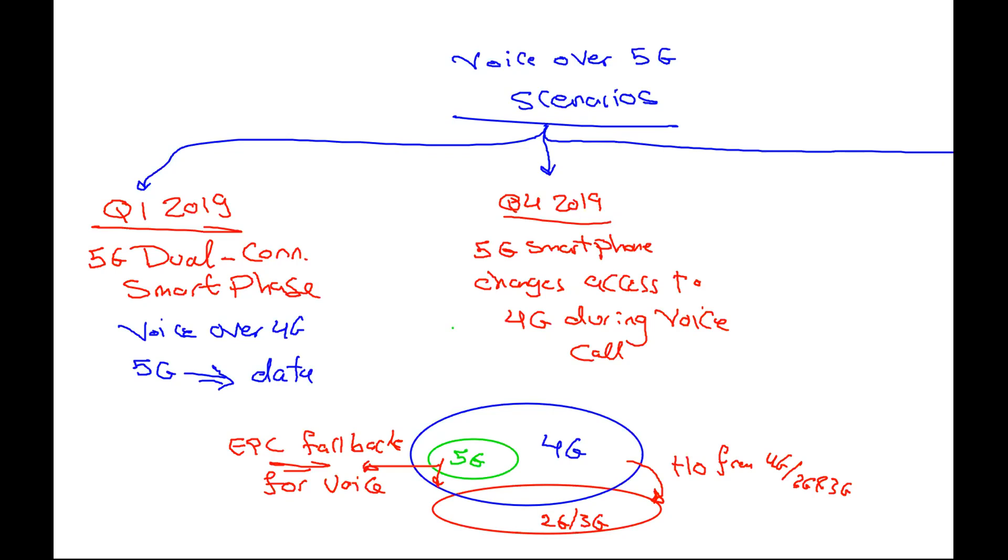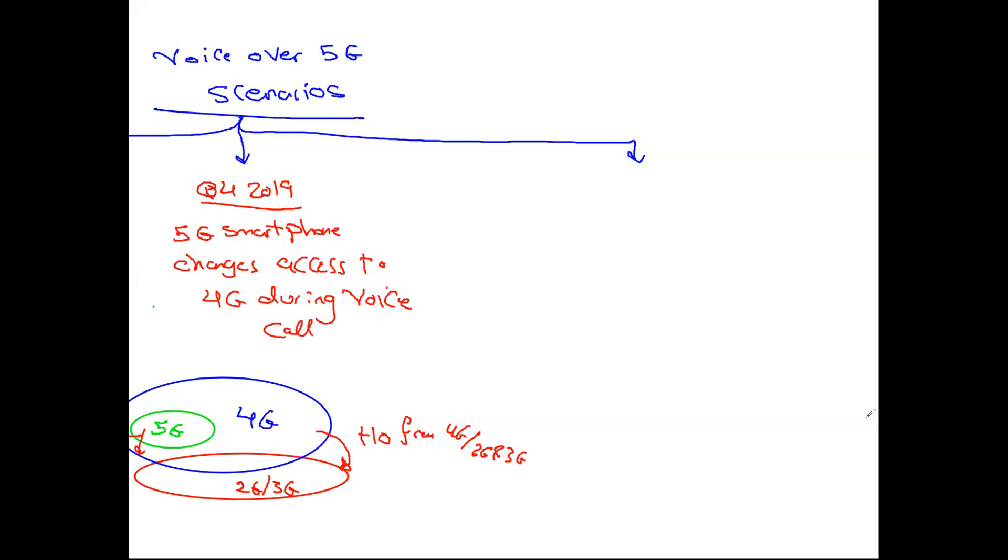And the third one will be 5G smartphone as we will see. And at H1 of 2020, as there will be 5G smartphone using voice over 5G. Here we can see there are some difference as we will have 2G and 3G. And we will have coverage of 4G, for example here. And we have standalone coverage for 5G. Standalone coverage for 5G.